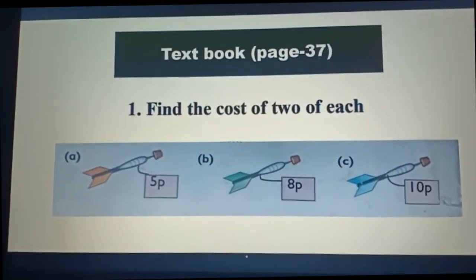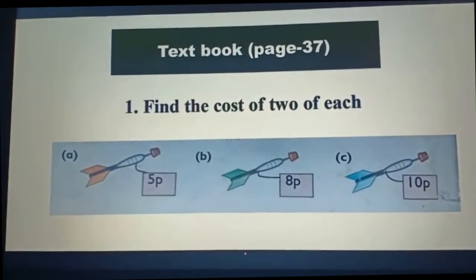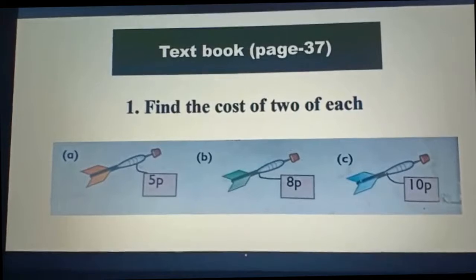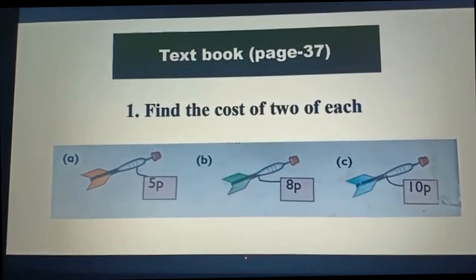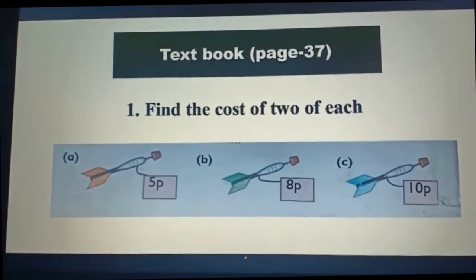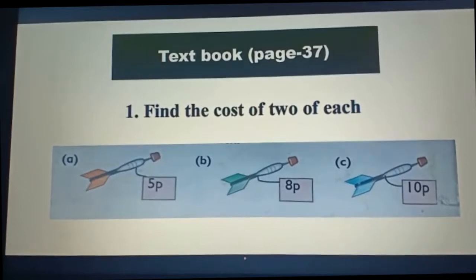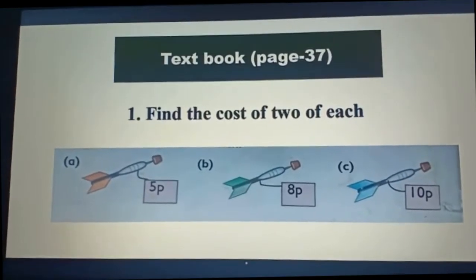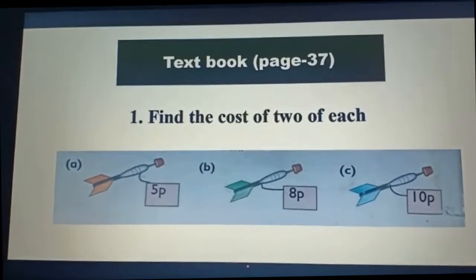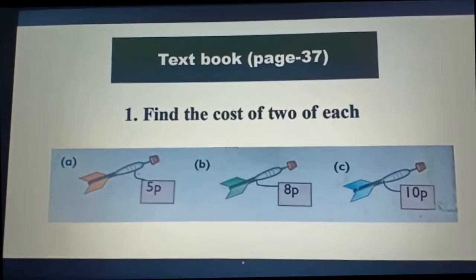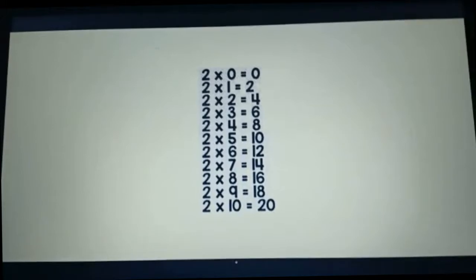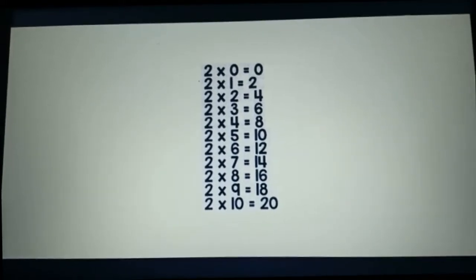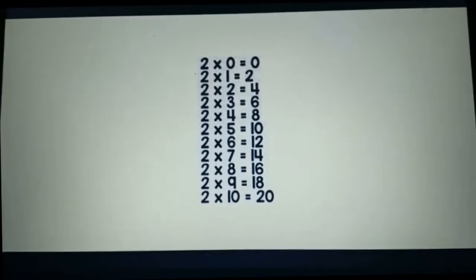Today we are going to solve from the textbook, page 37, number 1: find the cost of 2 of each. Here we can see we have 3 dots, but we have to find the cost of 2 of each. To solve this problem, we need to know the times table of 2.